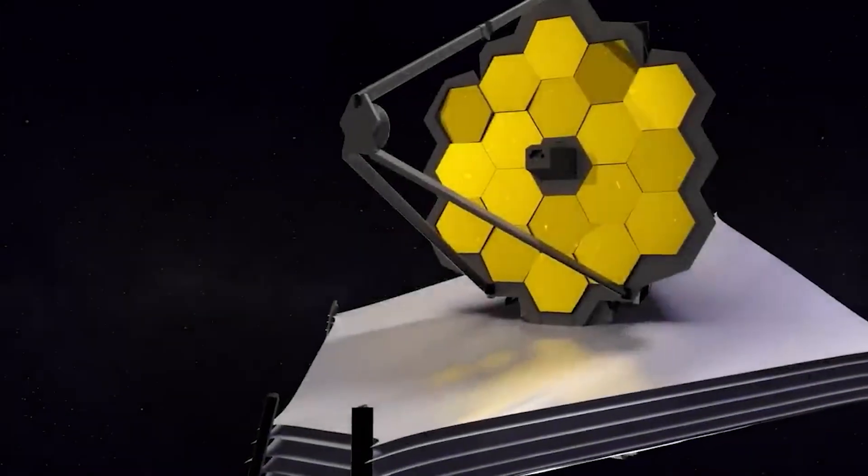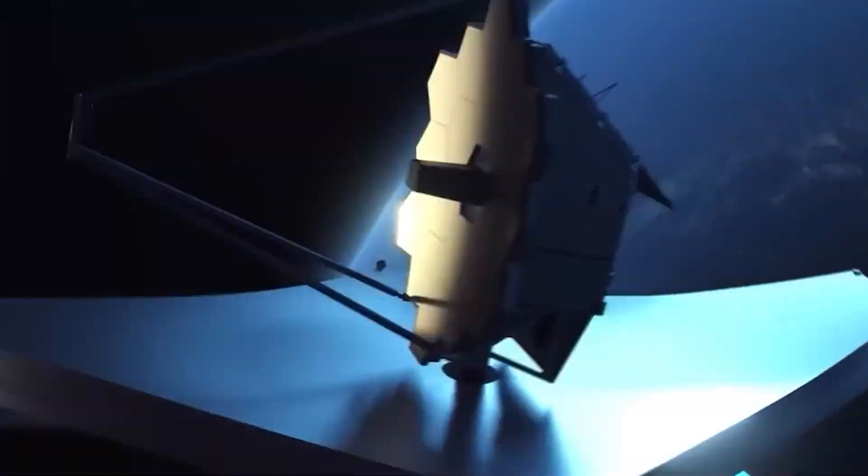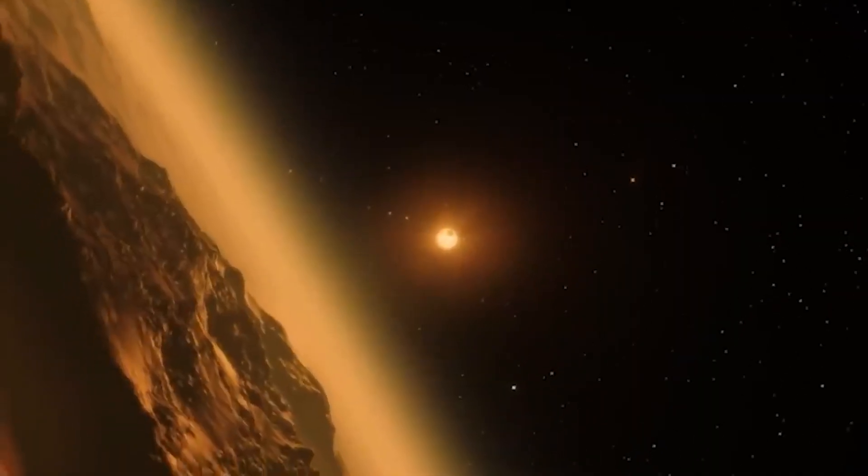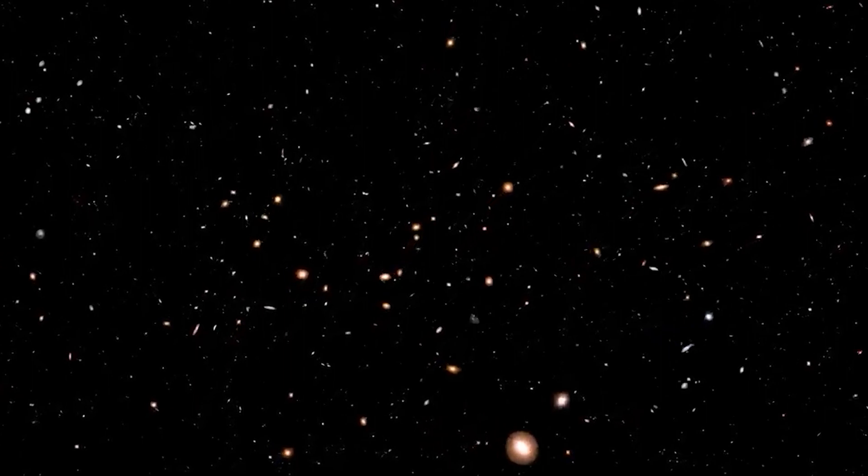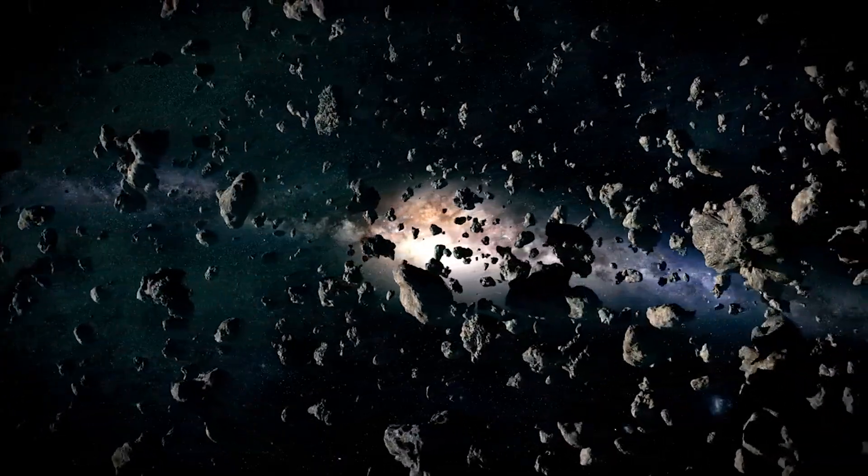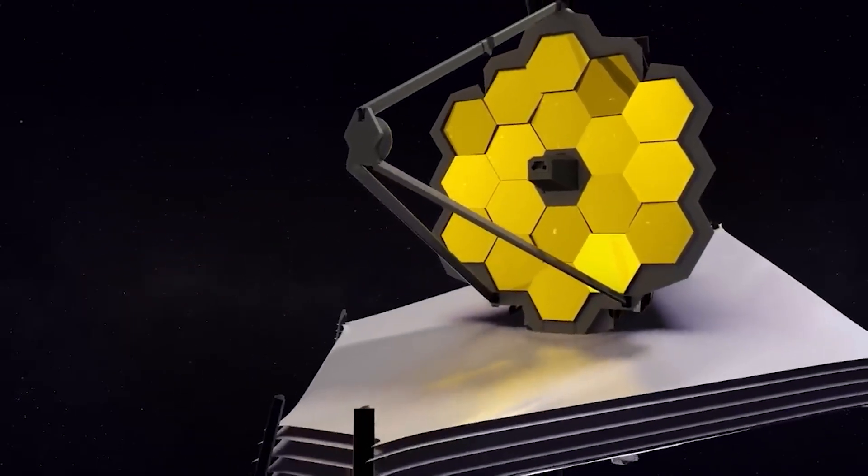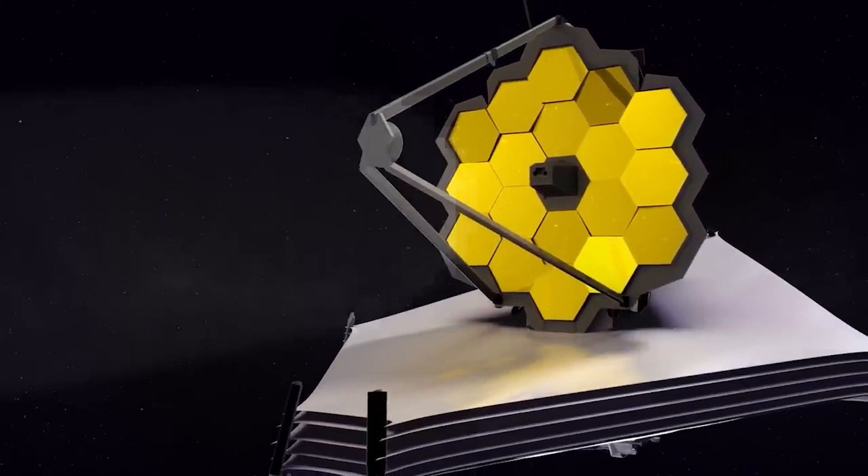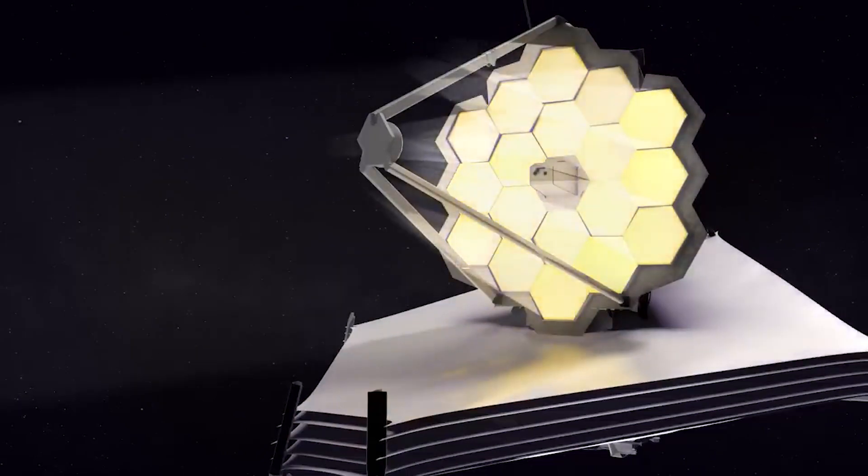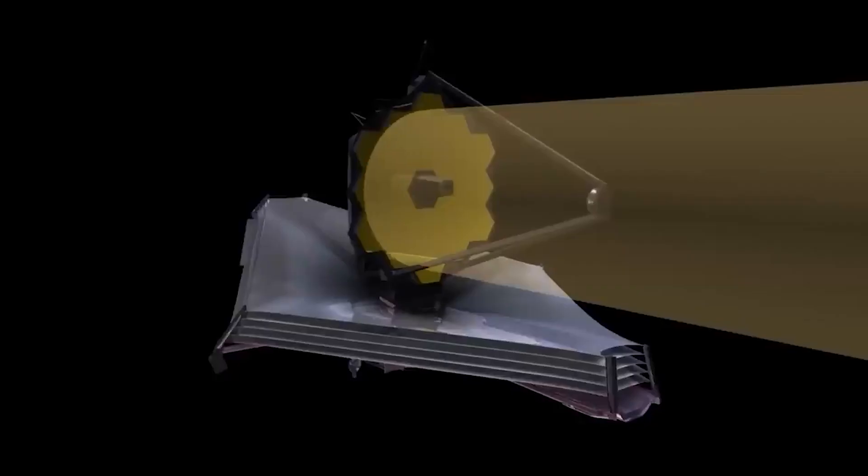Paul Geithner, Technical Deputy Project Manager at NASA Goddard, said: 'We always knew that Webb would have to weather the space environment, which includes harsh ultraviolet light and charged particles from the sun, cosmic rays from exotic sources in the galaxy, and occasional strikes by micrometeoroids within our solar system. We designed and built Webb with a performance margin—optical, thermal, electrical, mechanical—to ensure it can perform its ambitious science mission even after many years in space.'